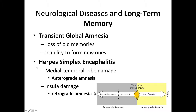In herpes simplex encephalitis, patients often have temporal lobe damage accompanied by severe memory impairment. This temporal lobe damage will typically result in anterograde amnesia. If patients have additional damage in the lateral temporal cortex, the insula, and the ventromedial prefrontal cortex, they will also have retrograde amnesia.